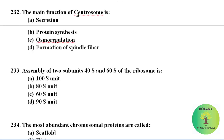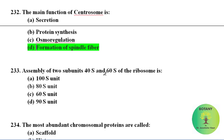The main function of the centrosome is the formation of spindle fibres. When the two subunits 40S and 60S of ribosome assemble, the resulting unit will be the 80S subunit, which is present in eukaryotic cells.